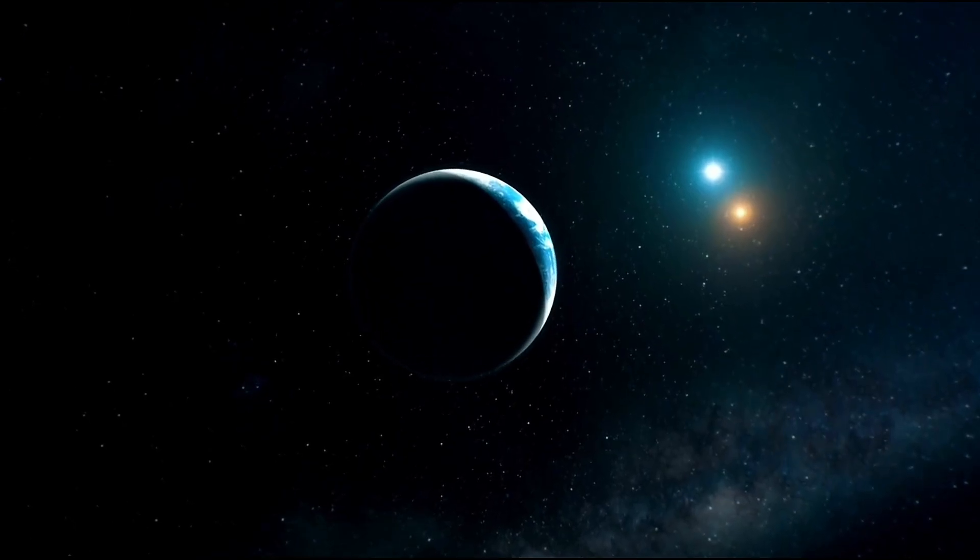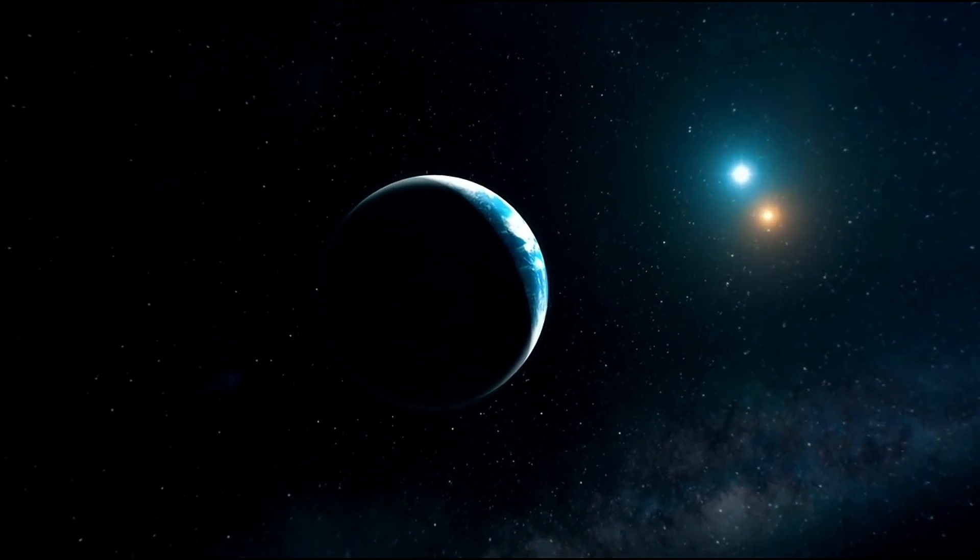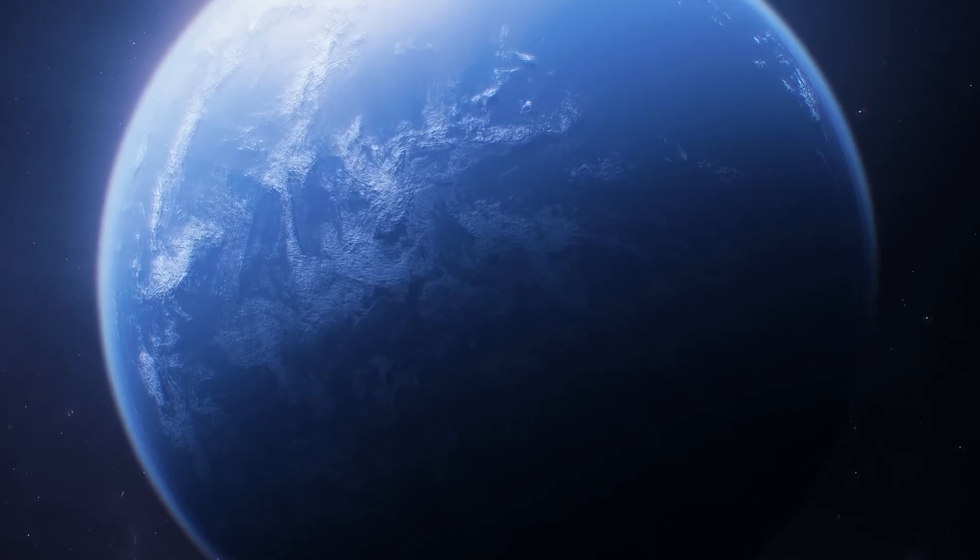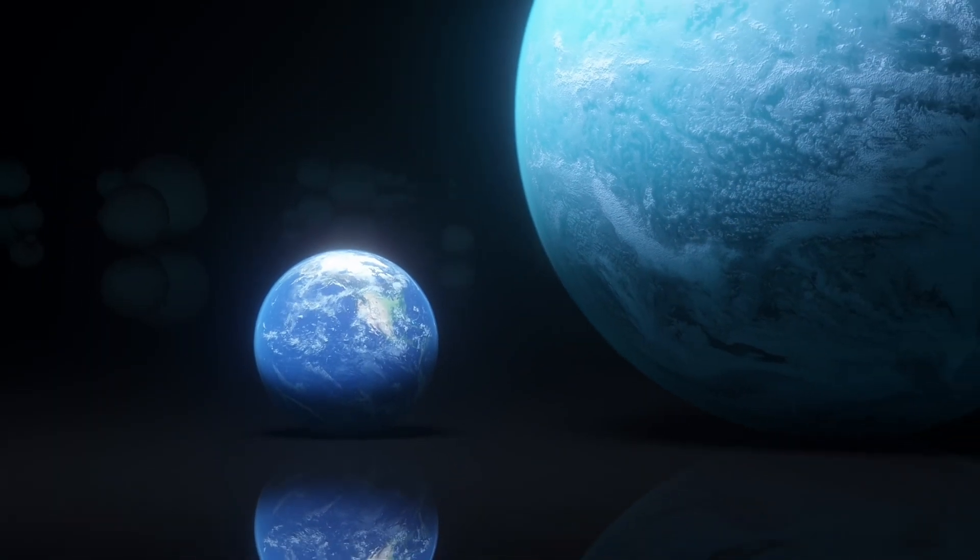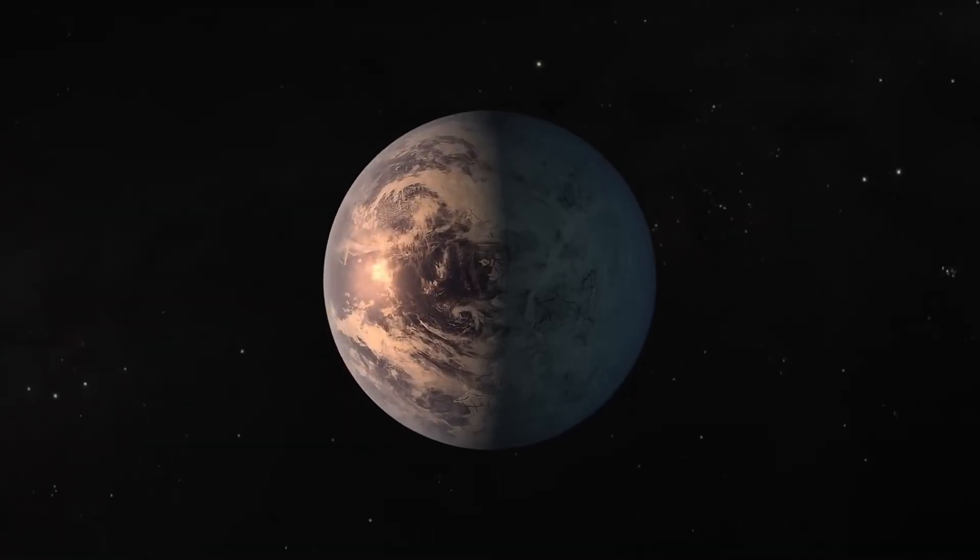Now imagine what this planet might look like. Kepler-452b is what scientists call a super-Earth. It's about 60% larger in diameter than our planet and weighs five times more.